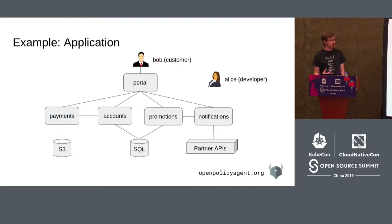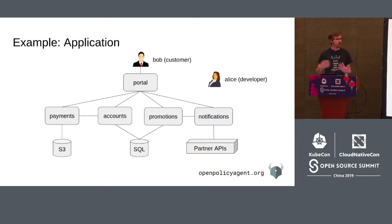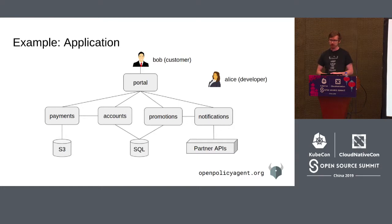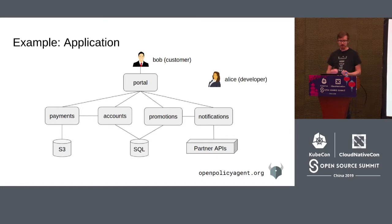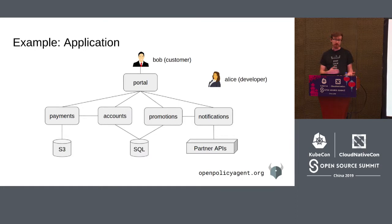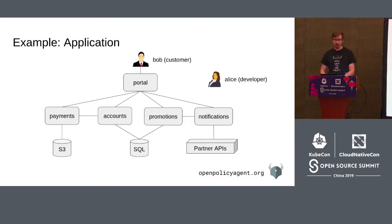To motivate the problem and explain why OPA exists: imagine you have a large microservice-based application. You have a portal your customers connect to — maybe to buy things or do online shopping. That application is implemented by a set of microservices: a payments service, an account data service, a promotions service, a notifications service that talks to partner APIs. Some services talk to internal databases like MySQL, others to external services like S3. This is a very typical architecture in modern organizations.